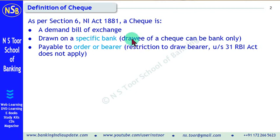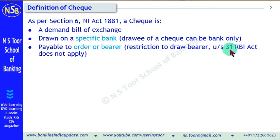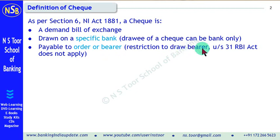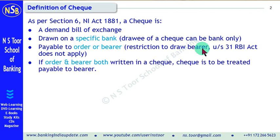The third important aspect: a check can be made payable to order or bearer. For a promissory note, bill of exchange, or demand draft, there is a restriction under Section 31 of the RBI Act that they cannot be made payable to bearer. But that restriction is not applicable on a check. Hence, a check can be made payable to bearer as well as payable to order.